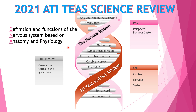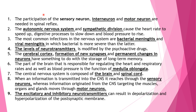We're going to go over the CNS and PNS, sensory neurons, interneurons, the sympathetic division, neurotransmitters, cerebral cortex, brain, spinal cord, autonomic nervous system, peripheral nervous system, and the central nervous system. There's a lot more covered in this PowerPoint, but this is what's in the first slideshow. Please subscribe and hit the notification bell to be updated on my future ATI review series.